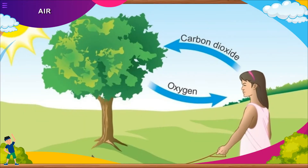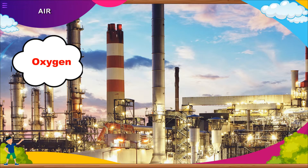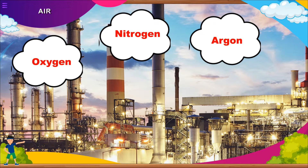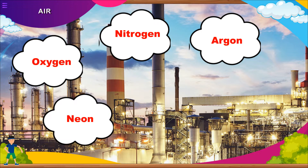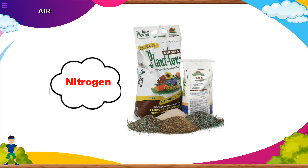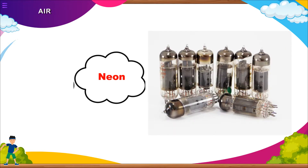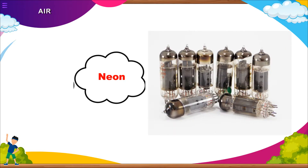Plants use carbon dioxide to prepare their food. Oxygen, nitrogen, argon, neon, krypton and xenon are used in making many industrial products. Nitrogen is used for making fertilizers. Argon is used in bulbs. Neon is used for lighting and in television tubes.